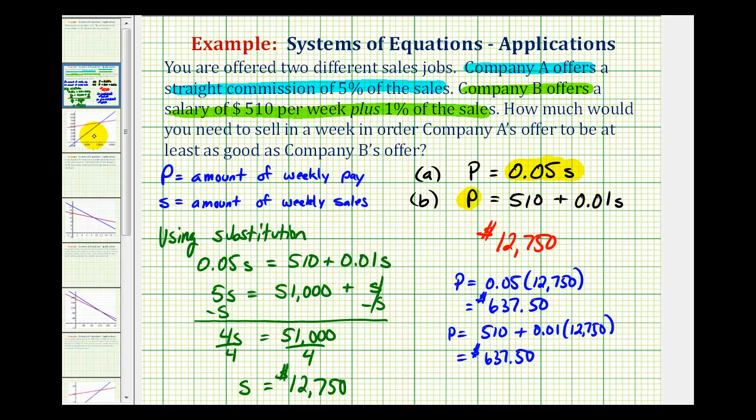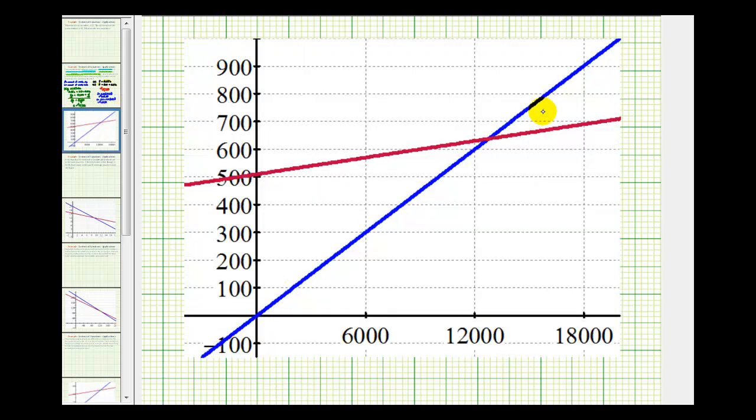If we take a look at this solution graphically, the blue line represents the straight commission offer, and the red line represents the salary plus commission offer. Therefore, this point of intersection represents the solution where the x coordinate represents the amount of sales, which we already said was 12,750, and the y value would be the weekly pay amount, which we said was $637.50.